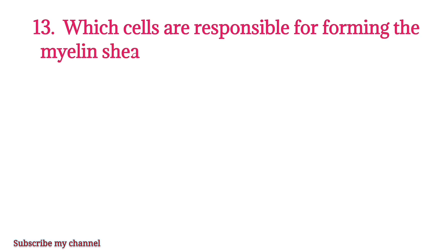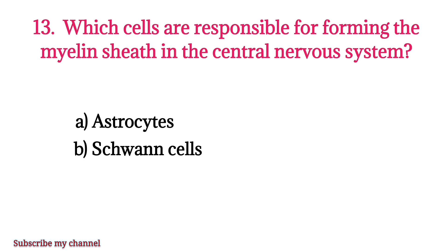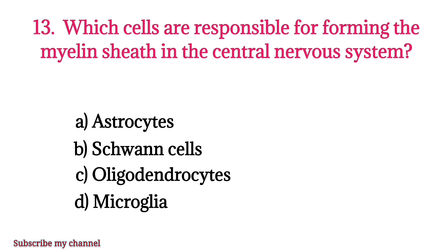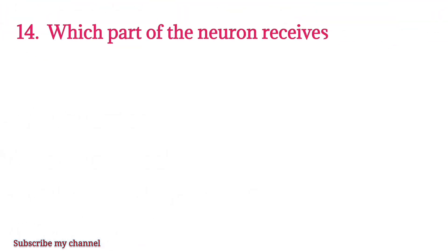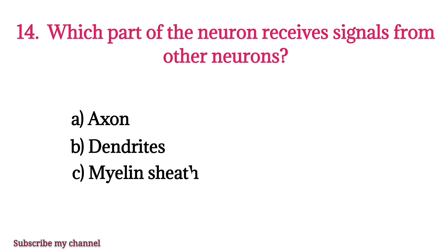MCQ number thirteen: Which cells are responsible for forming the myelin sheath in the central nervous system? MCQ number fourteen: Which part of the neuron receives signals from other neurons? Option A: axon, option B: dendrites, option C: myelin sheath, option D: synaptic knob. The right option is option B.